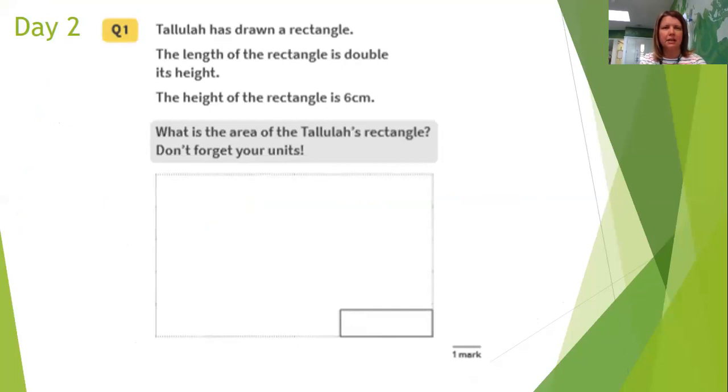So looking back at that, I think the best thing to do in my working out space is draw the rectangle. Now you could draw it to scale if you want to, but you don't need to. I haven't.